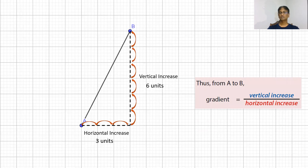We have seen that gradient is equal to vertical increase divided by horizontal increase. Therefore, for this example, it is 6 divided by 3, which is 2.